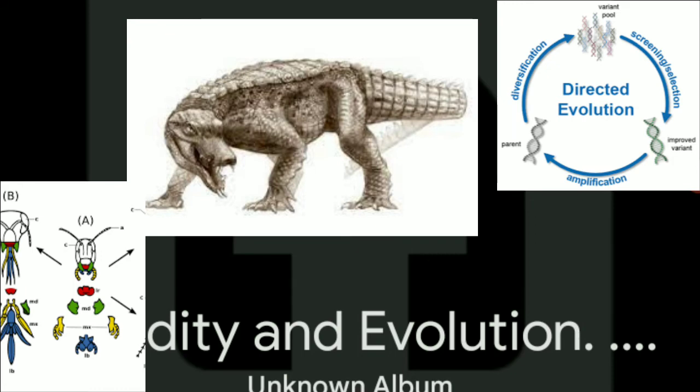Question 6: Distinguish the comparable and homologous organs among the accompanying: wings of a bug, wings of a bat, four limbs of reptile, and four limbs of bird. Reply: Undifferentiated from organs: wings of a bug and wings of a bat. Homologous organs: four limbs of reptiles and four limbs of birds. Question 7: Give a model where not entirely settled by the natural elements. Reply: In certain snails and turtles, still up in the air by natural elements. Question 8: Think of single word for the arrangement of new species because of progressive change over significant stretch of time. Reply: Speciation. Question 9: What is heredity? Arrangement: The congruity of elements starting with one age then until the next is known as heredity. It is additionally characterized as the transmission of characteristics from guardians to the offsprings.